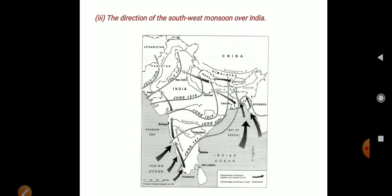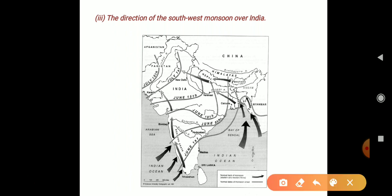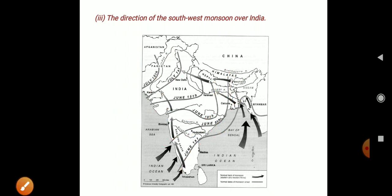The southwest direction — the line is drawn now, indicating the direction of the southwest monsoon over India.